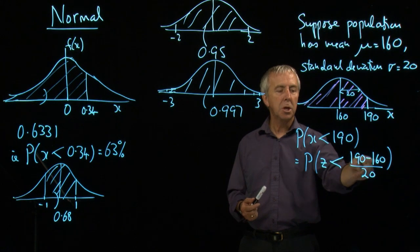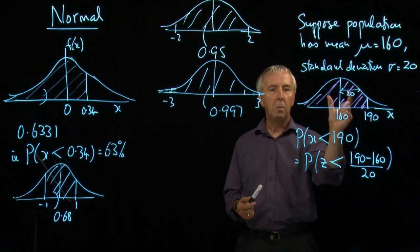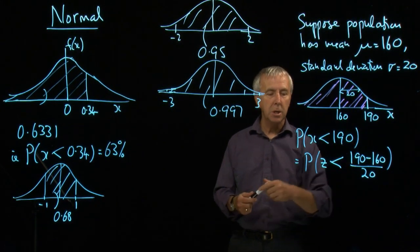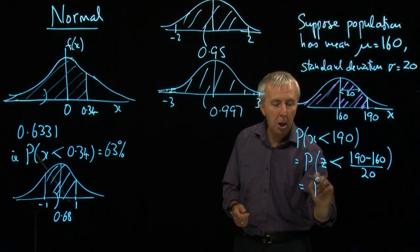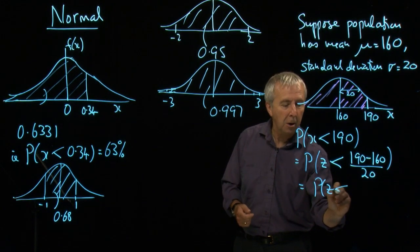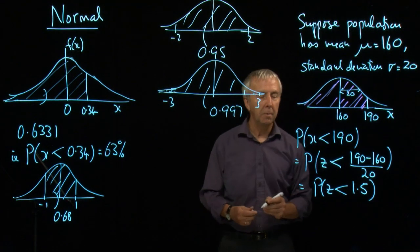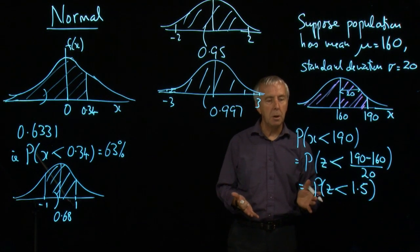In this case, I'm 30 units away. One standard deviation is 20 units. So I'm actually one and a half standard deviations away. And that's what I then look up in the tables.